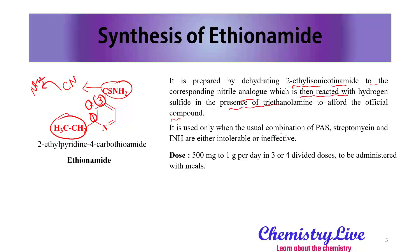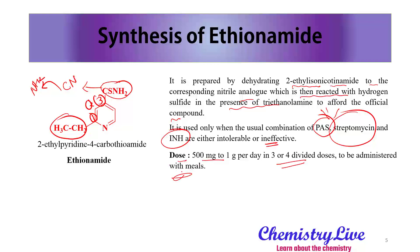Ethionamide is used only when the usual combination of PAS, streptomycin, and INH are either intolerable or ineffective — it is only used when those three types of drugs fail. The dose is 500 mg to 1 g per day in 3 or 4 divided doses, to be administered with meals.